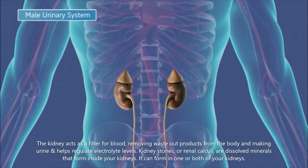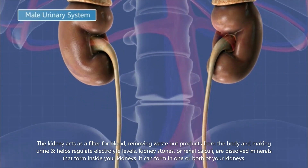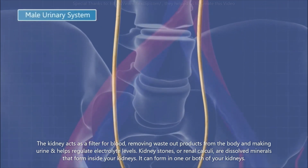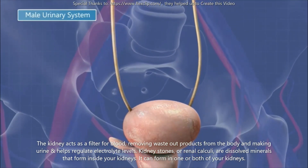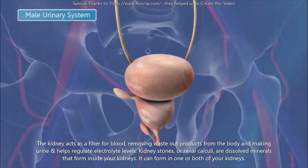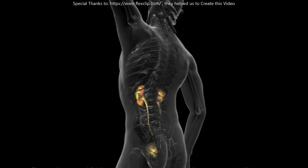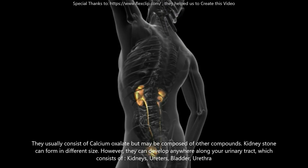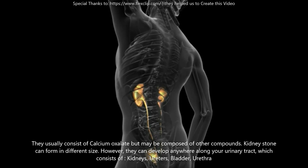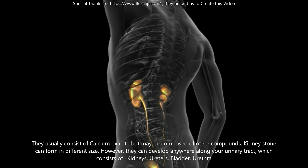The kidney acts as a filter for blood, removing waste products from the body, making urine, and helping regulate electrolyte levels. Kidney stones, or renal calculi, are dissolved minerals that form inside your kidneys — in one or both. They usually consist of calcium oxalate but may be composed of other compounds, and can form in different sizes.